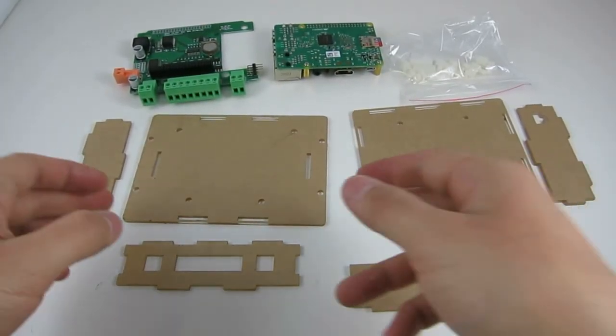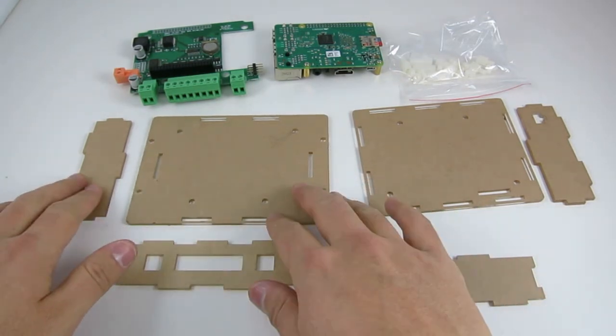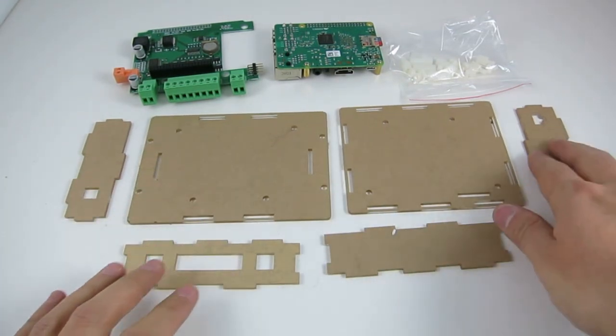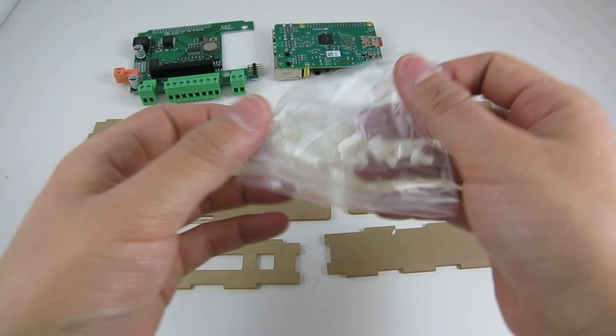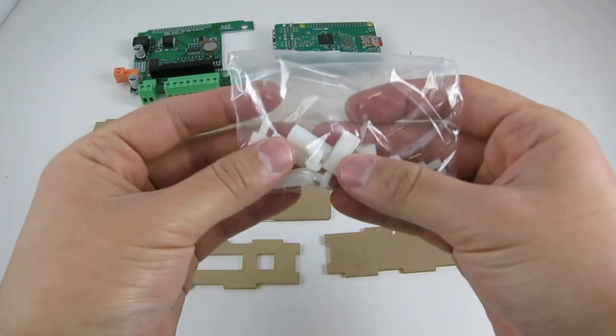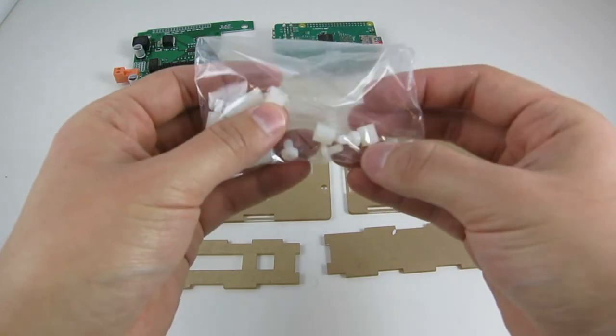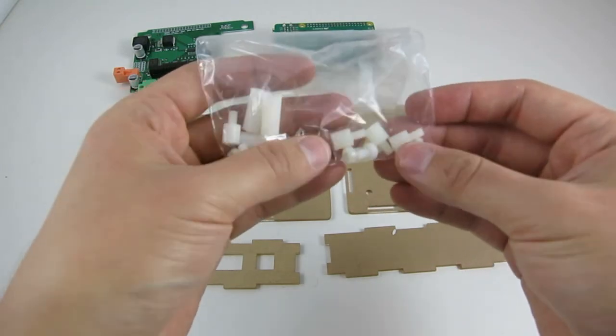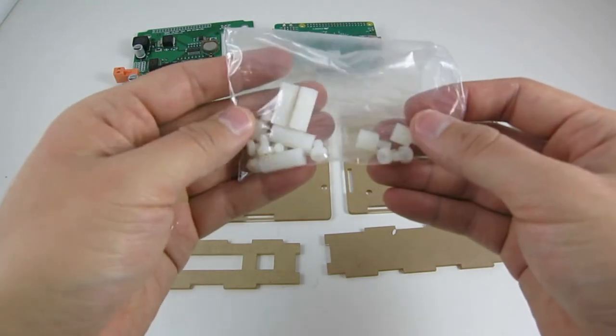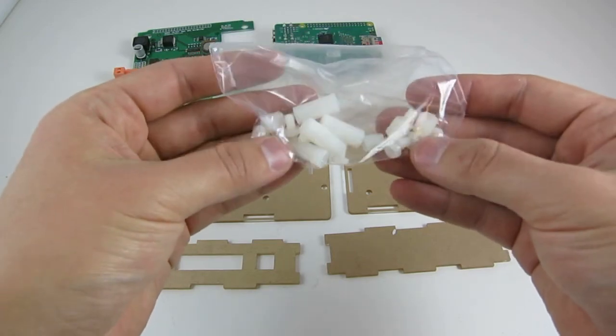Before we begin, please check the enclosure pieces. There should be six panels and a screw bag which contains four longer plastic support pillars, four smaller plastic support pillars, and altogether eight screws.